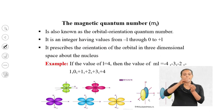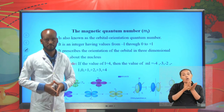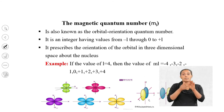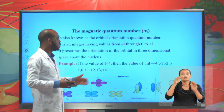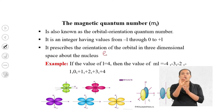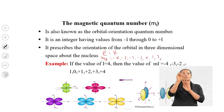The magnetic quantum number, denoted by the symbol ml, is also known as the orbital orientation quantum number. It takes integer values from −l through 0 to +l, and prescribes the orientation of the orbital in three-dimensional space about the nucleus. For example, if l = 4 (the g subshell), then ml ranges from −4 to +4: −4, −3, −2, −1, 0, 1, 2, 3, 4.